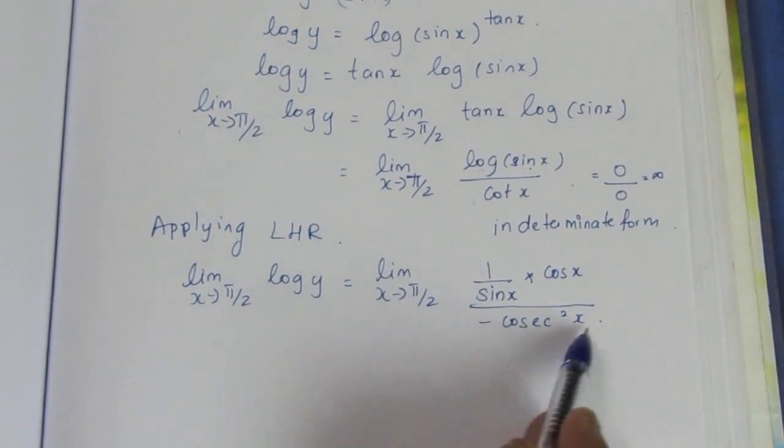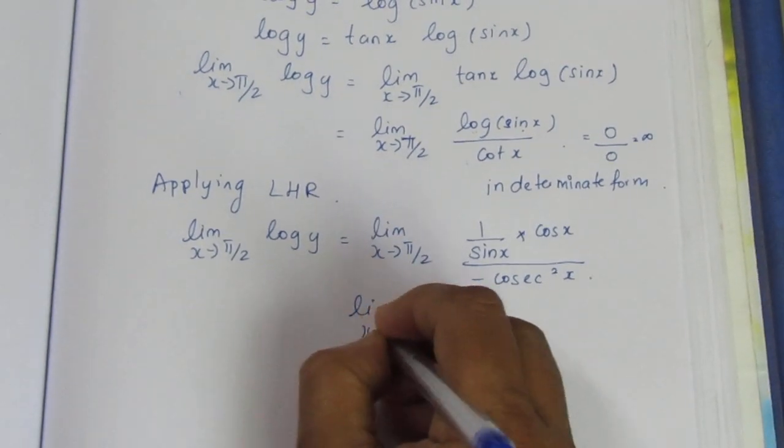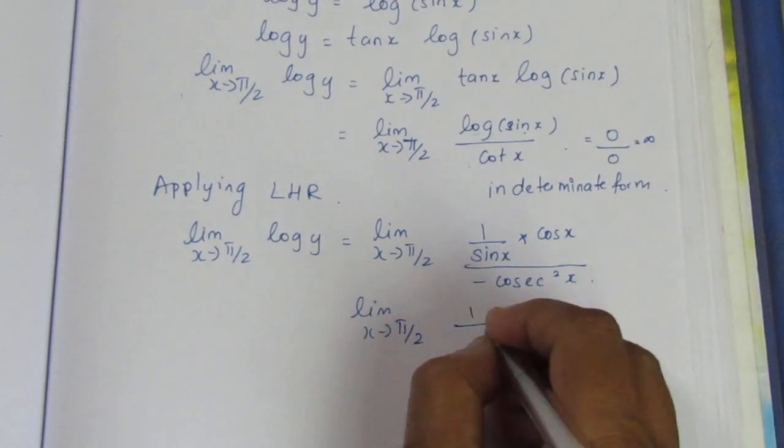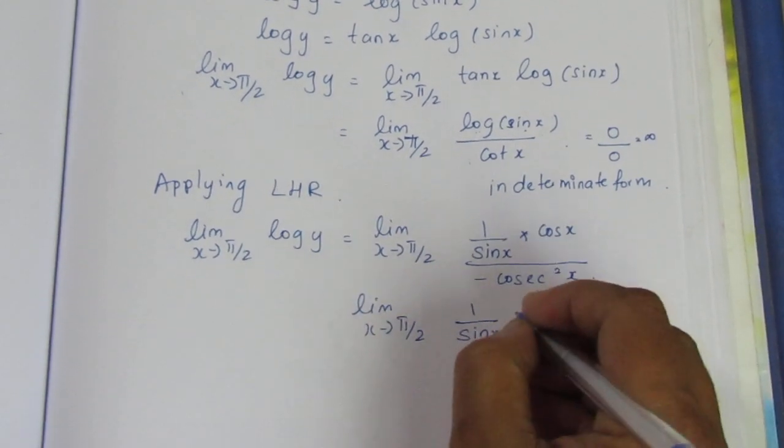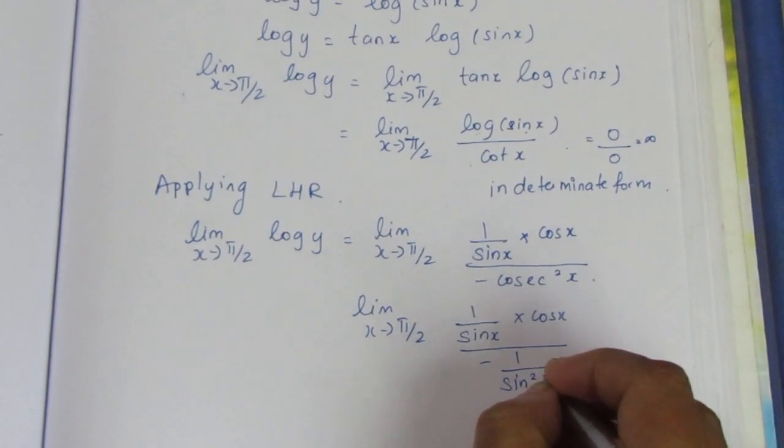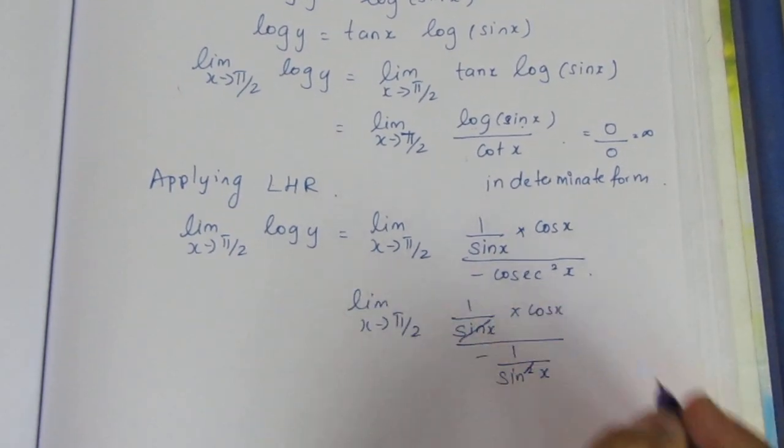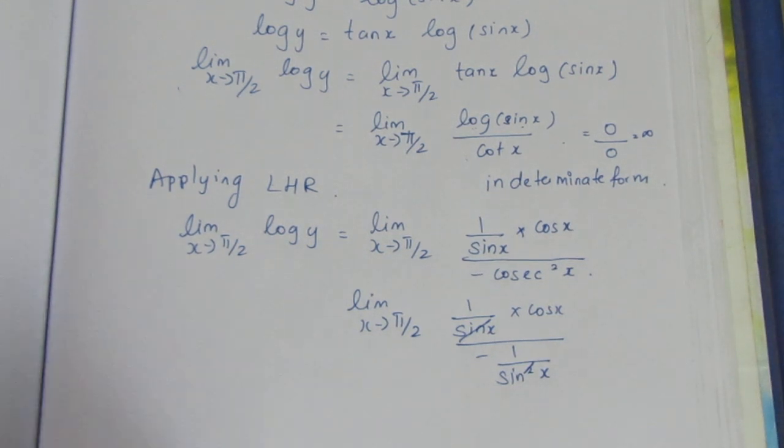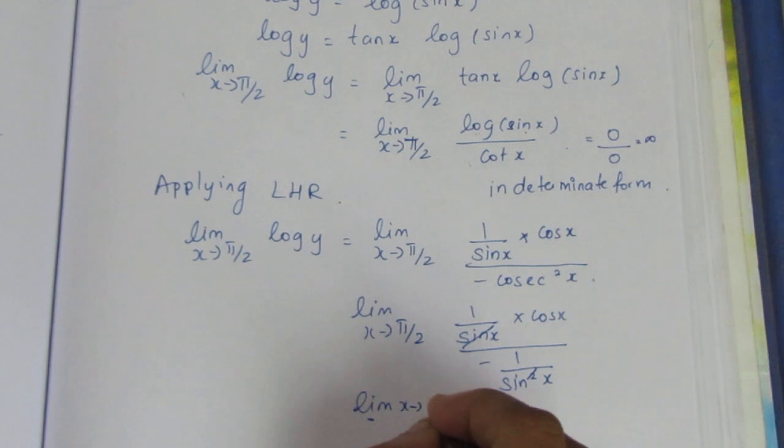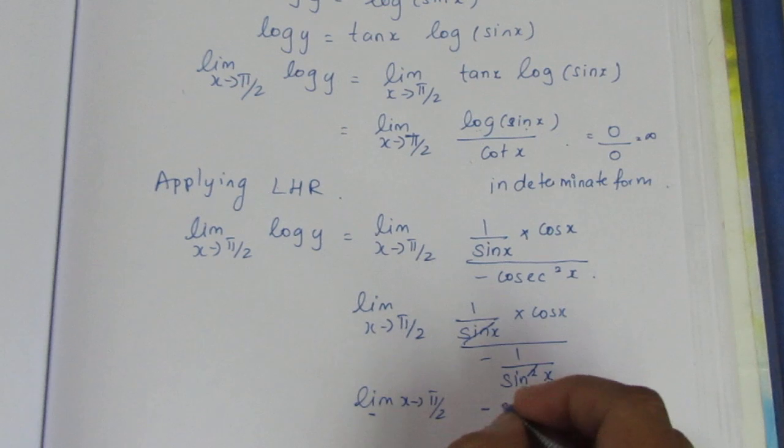This becomes minus 1 by sin squared x. Limit x tends to π/2, this equals 1 by sin x times cos x divided by minus 1 by sin squared x. Simplifying, sin x cancels, and taking the reciprocal, we get limit x tends to π/2, minus sin x cos x.